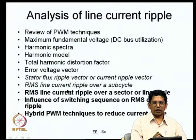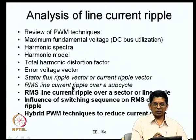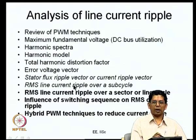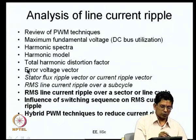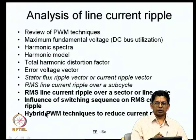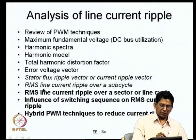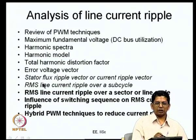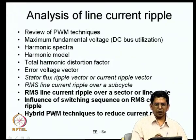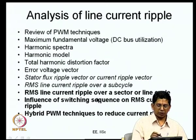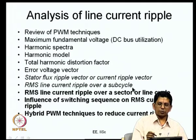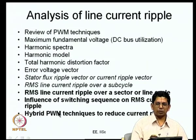We are looking at the error voltage vector — in the space vector point of view, what you need to do is apply a three-phase voltage that is a revolving vector of uniform magnitude. But what you apply is one of those seven vectors produced by the inverter, which is not the same as what you want. There is a difference between what you want and what you apply, and therefore there is an error. This error voltage vector is integrated to get your stator flux ripple vector. This integral of the error voltage vector — the stator flux ripple — is proportional to the current ripple. We are evaluating this RMS line current ripple over a particular sub-cycle, and then studying the influence of various switching sequences on RMS current ripple and how to come up with hybrid PWM techniques to reduce this current ripple.